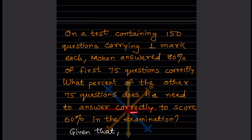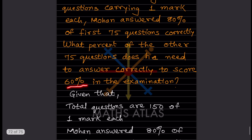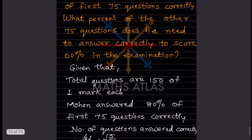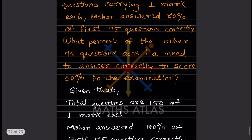So now, what is given? Total questions are 150, one mark each. Out of that, Mohan answered 80% of the first 75 questions correctly, which is given.